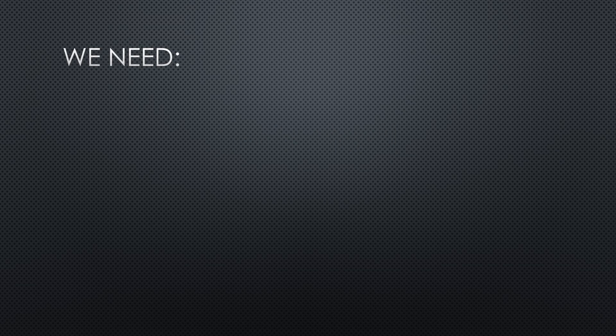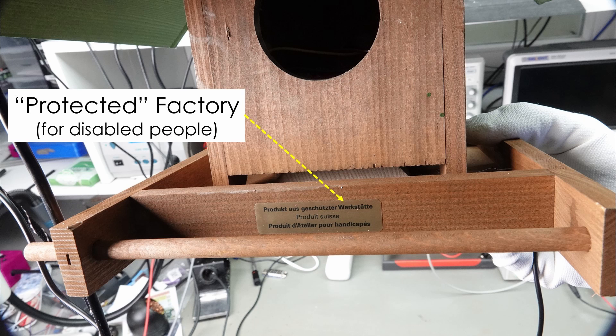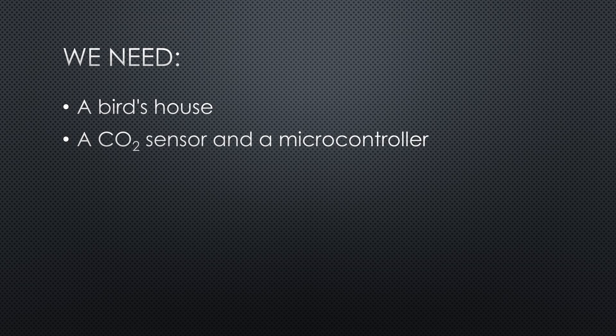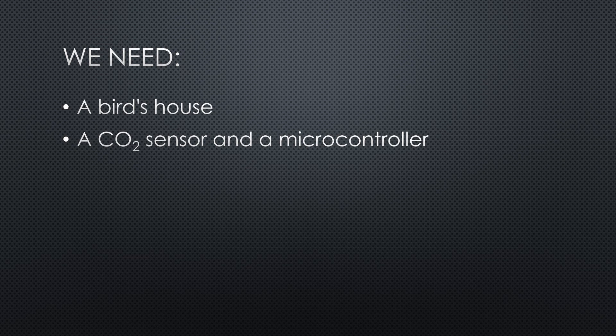Let's start with the build. We need five things: a bird's house, a CO2 sensor and a microcontroller. I will use a professional sensor from Sensirion and an ESP32, mainly because it runs on 3.3V. It is also extendable if you want to create a dashboard for your school, for example.